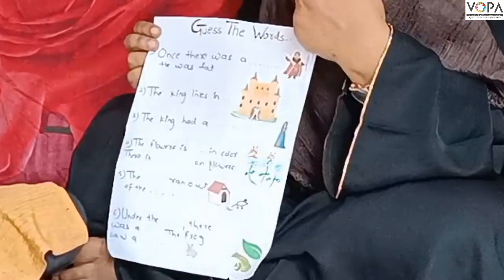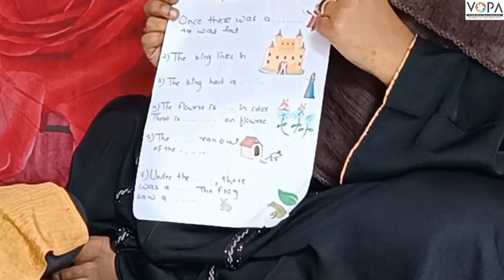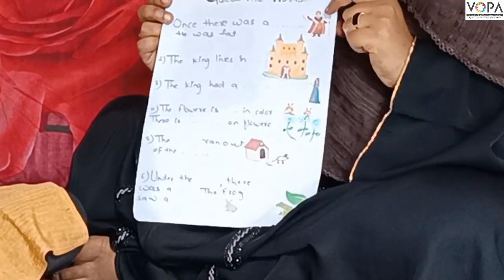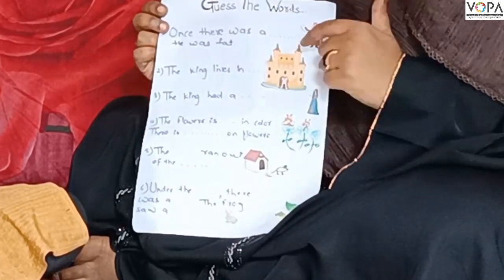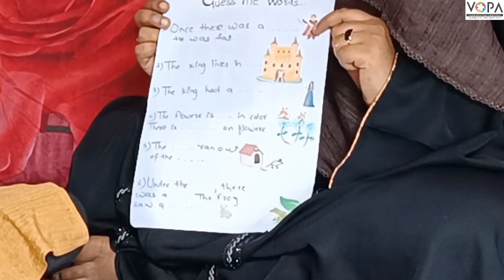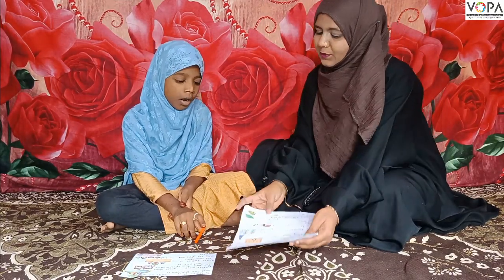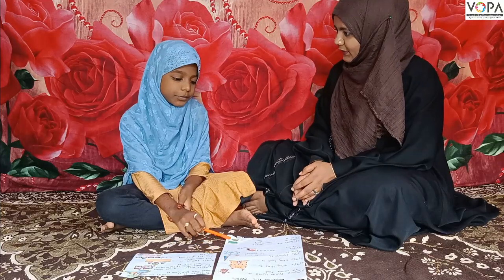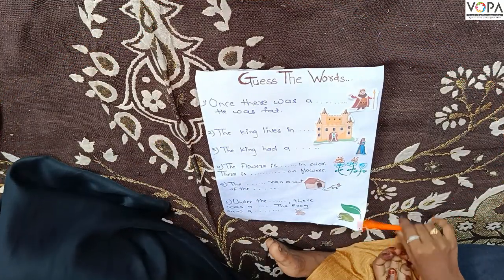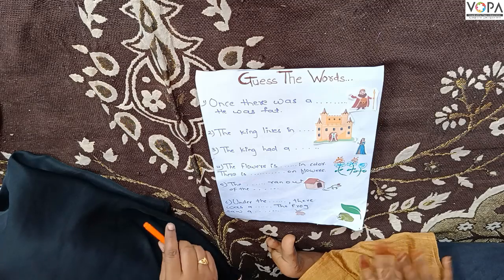What is our lesson? Guess the what. What do you want to do? You want to see the picture. You want to complete the sentence. Okay? What do you want to do — one by one sentence. We want to complete it. Let's go, Myra. Let's fill it. Okay? Let's go.